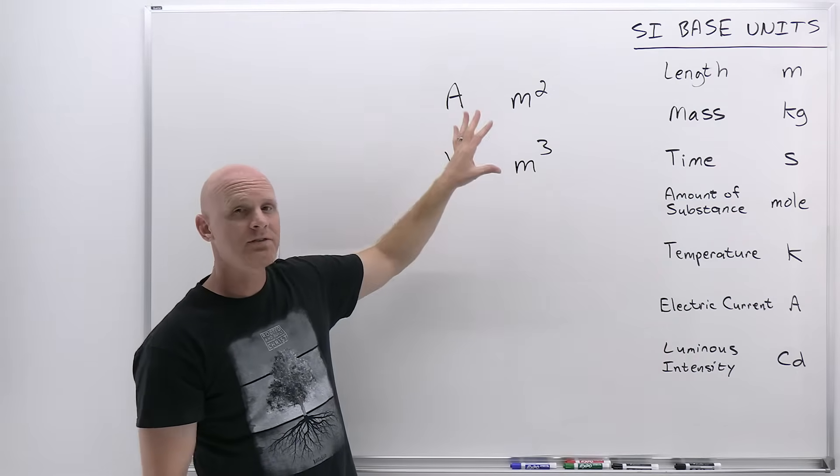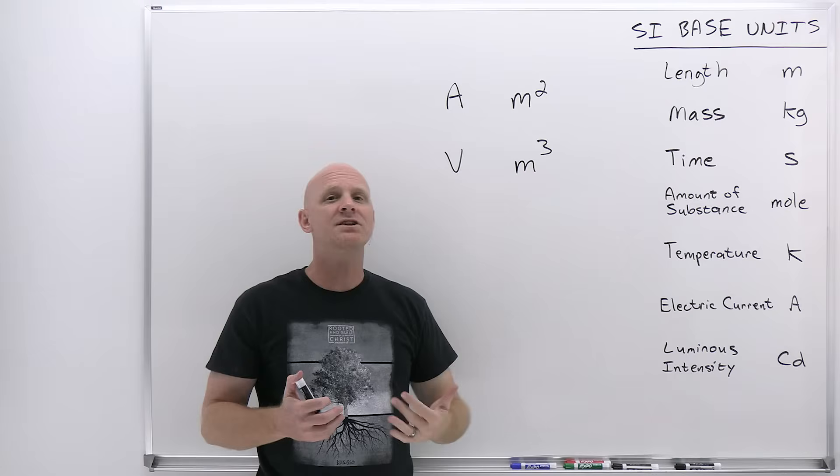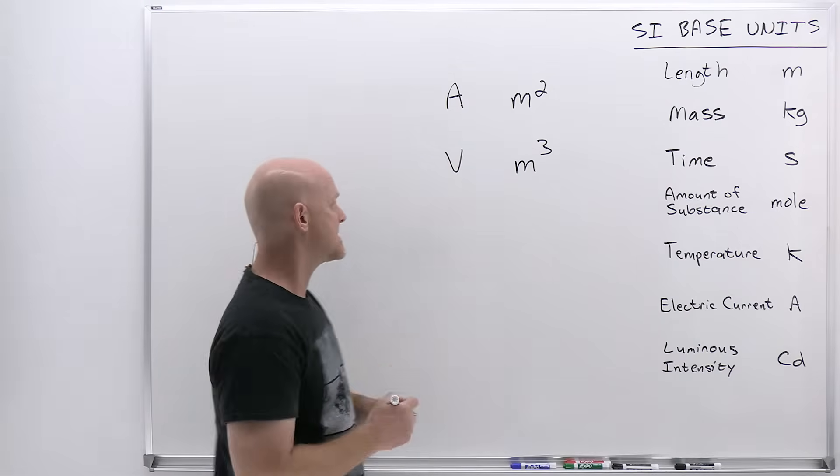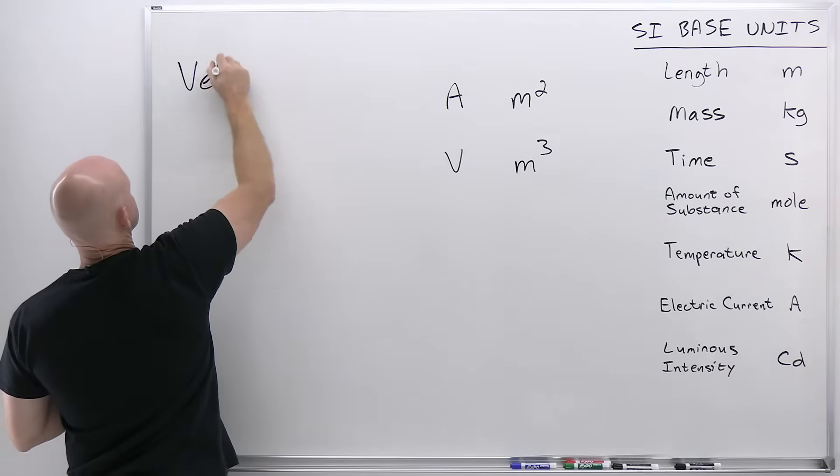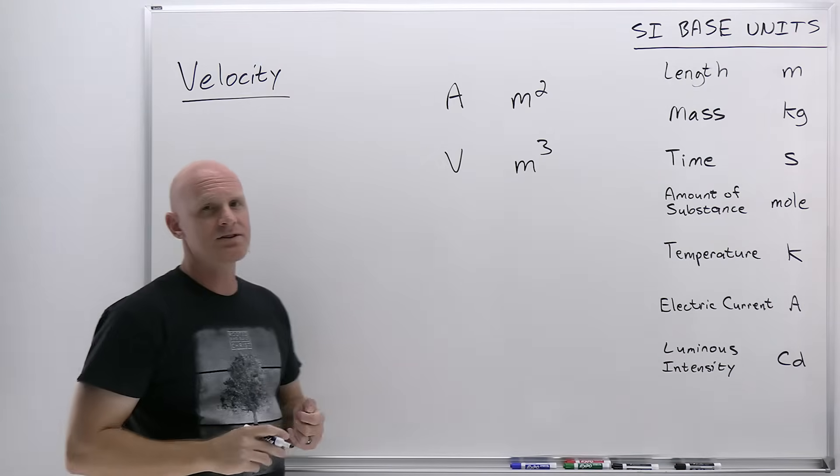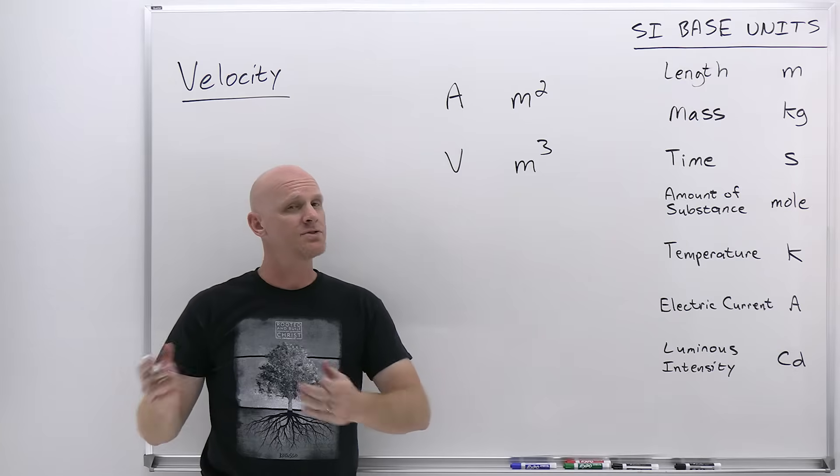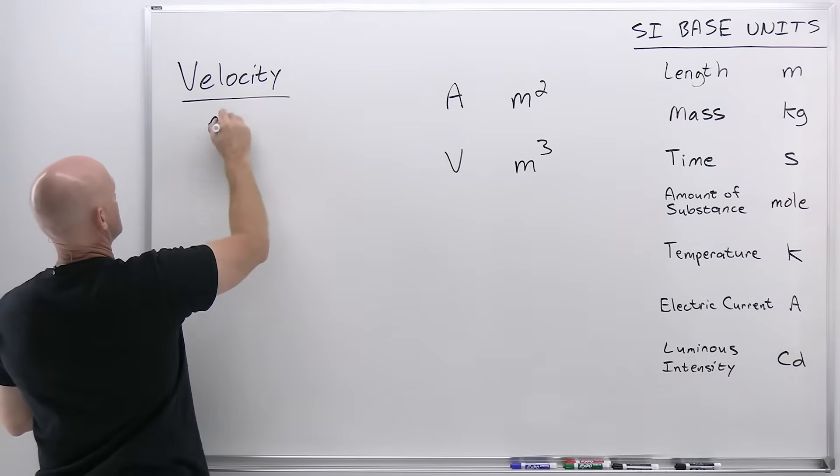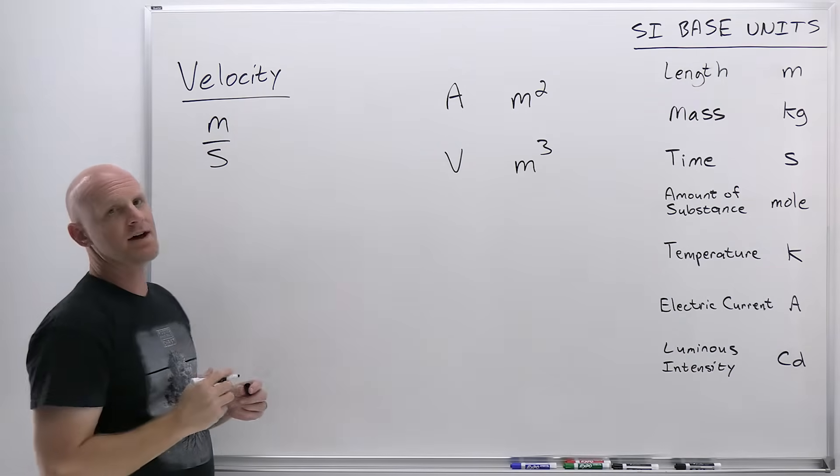Let's talk another place where units can be helpful, and that's in what we call dimensional analysis. So let's say we take a look at velocity for just a second. If you look at your study guide there, you can see that the SI derived unit for velocity is meters per second.